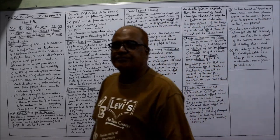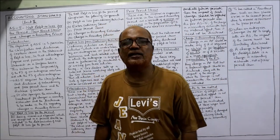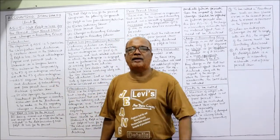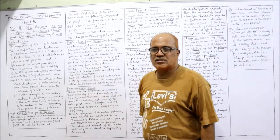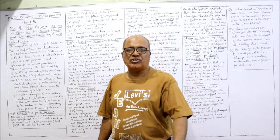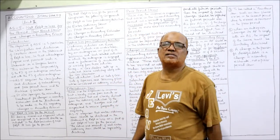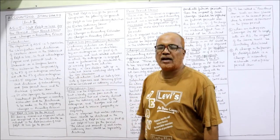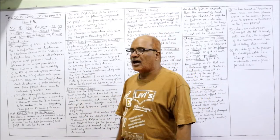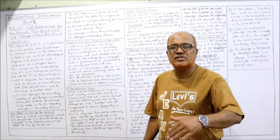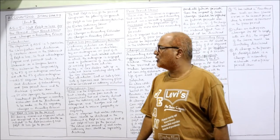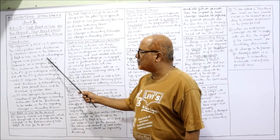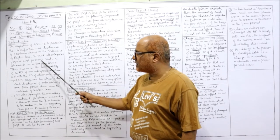AS5 — the title is net profit or loss for the period, prior period items, and change in accounting policies. The objective of AS5 is to prescribe the classification and disclosure of certain items in the statement of profit and loss, so that all enterprises prepare and present such a statement on a uniform basis.